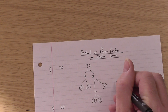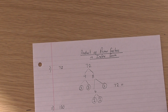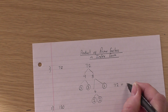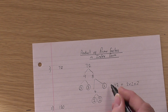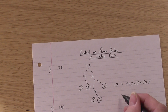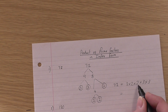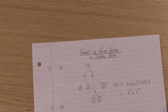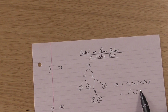Now we write the answer. We take 72 and say it equals these circled values, which are all prime factors. Product means we multiply them together, and we usually put them in ascending order — smallest numbers first. So: 2 times 2 times 2, that's three of them, then times 3 times 3. That product is the same as 72. Now in index form: there are three 2s so it's 2 to the power 3, multiplied by — there are two 3s — 3 to the power 2.